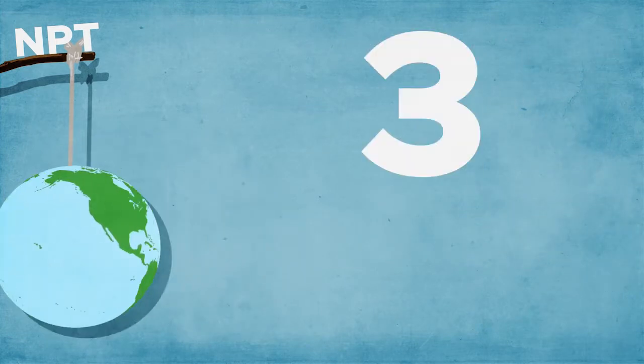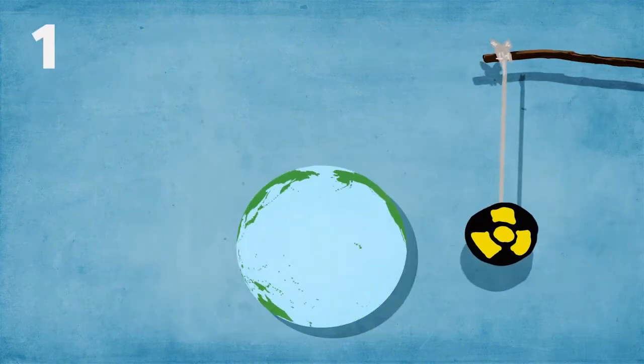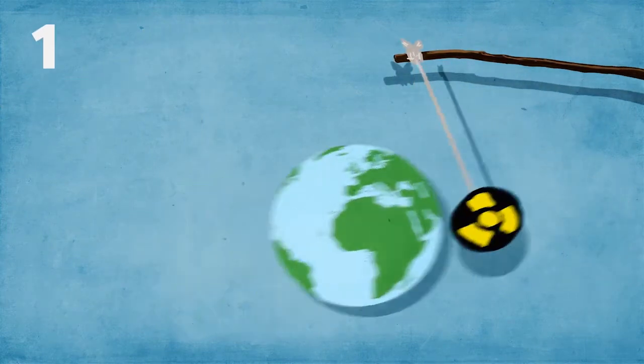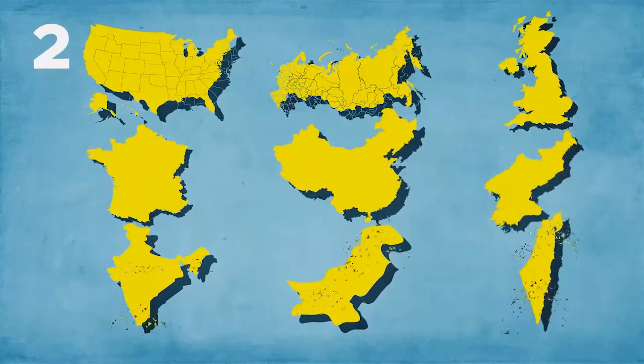The treaty has three basic principles. All states that did not have nuclear weapons would promise never to get them. All states with weapons would work to reduce and eliminate them.